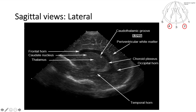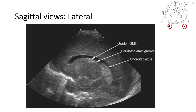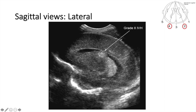This groove here is called the caudothalamic groove, which is a very fragile area. This is how grade one IVH looks — it starts in the caudothalamic groove. You can see a little bit of bright blood that does not extend inside the ventricle, and this is what we call grade one IVH. When that clot is a little bit bigger and extending inside the ventricle, this is grade two IVH.